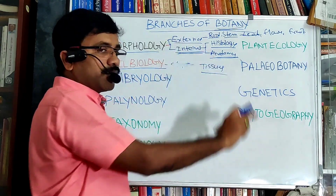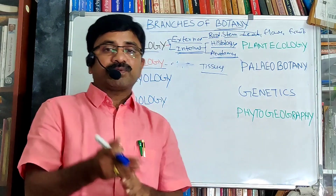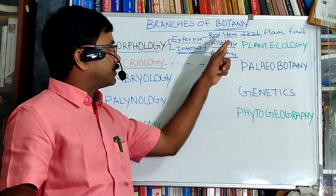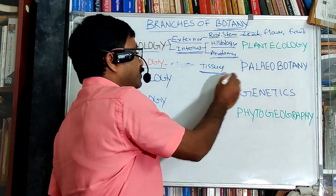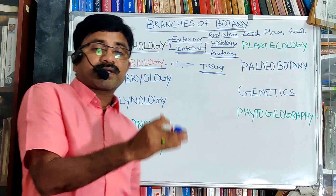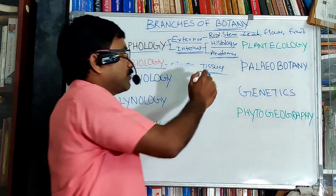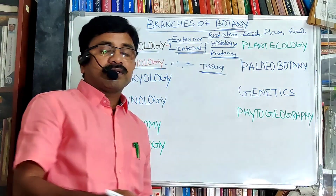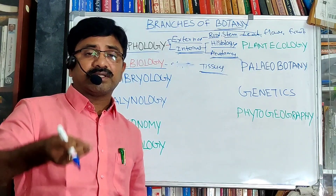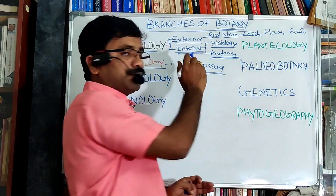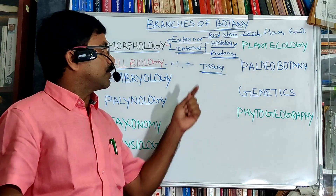The second kind is internal morphology, which is again of two types. First, histology — the study of various kinds of tissues found in the plant body. Second, anatomy — it deals with the extensive internal details, that is, the arrangement of tissues in various parts of the plant body.